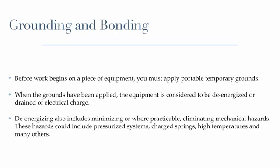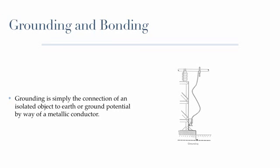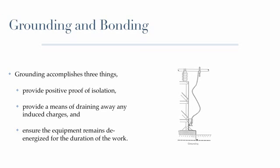Mechanical hazards could include pressurized systems, charged springs, high temperatures, and many others. Grounding is simply the connection of an isolated object to earth or ground potential by way of a metallic conductor. Grounding accomplishes three things: it provides positive proof of isolation, provides a means of draining away any induced charges, and ensures that the equipment remains de-energized for the duration of the work.